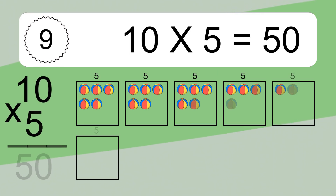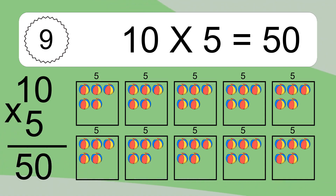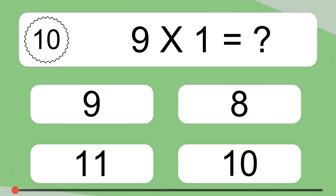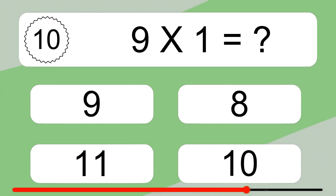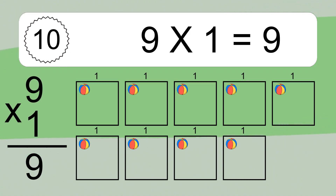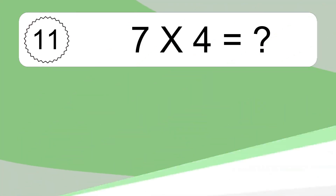10 times 5 equals what? 10 times 5 equals 50. We have 9 boxes and each box has 1 colorful ball inside. If you count all the balls in all the boxes together, you will have 9 times 1 balls. This equals 9 balls.